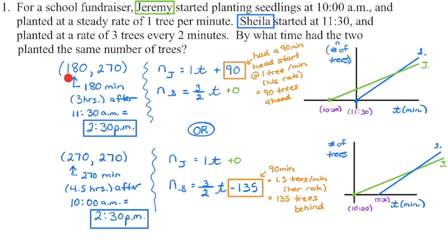Here's why: my X coordinate represents time in minutes. So 180 minutes, which is three hours, if you divide by 60, after our starting point, which is 11:30, they're going to plant the same number of trees, which happens to be 270. So we're going to take that starting point, 11:30, we're going to add on 180 minutes and that puts us at 2:30 PM.